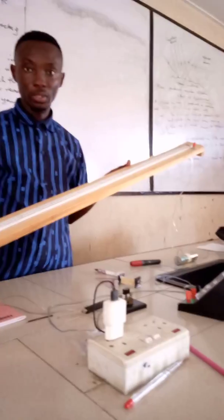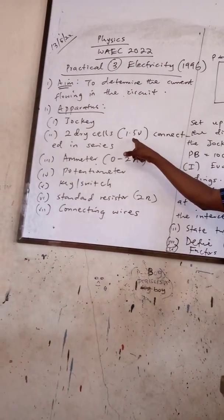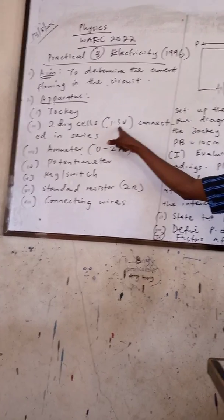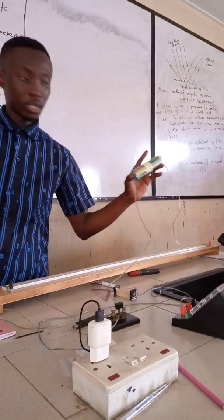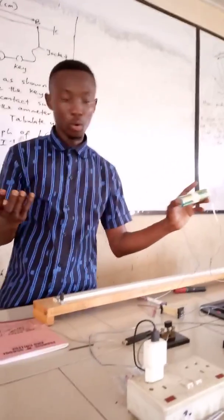This is what we call the potentiometer. We are also provided with two dry cells, each of EMF 1.5 volts connected in series. Of course we know this connection is made in series, 1.5 volts giving us 3 volts.